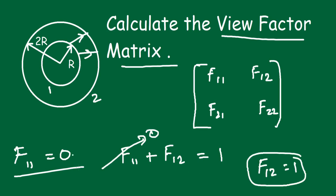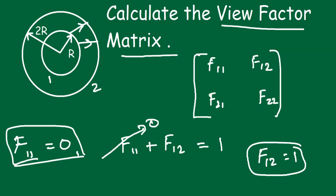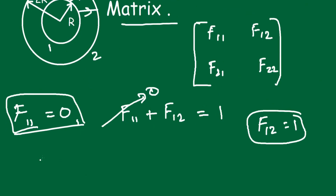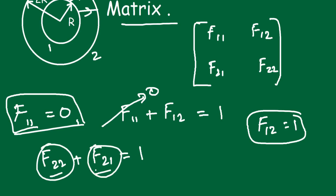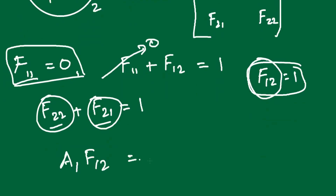Now we calculate F21. Using the summability rule: F22 + F21 = 1. To find one of these, we use the reciprocity rule: A1 × F12 = A2 × F21. Since we know F12, and we know the surface areas, we can easily calculate F21.